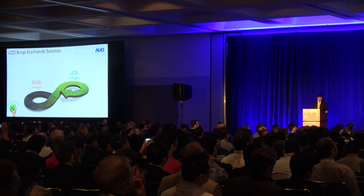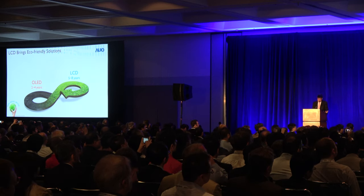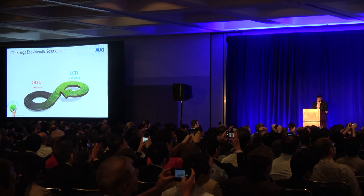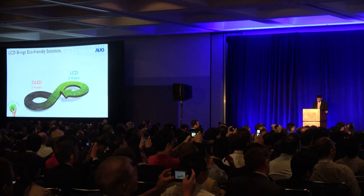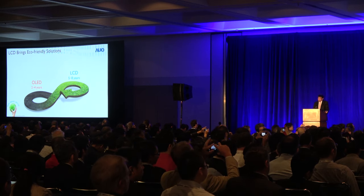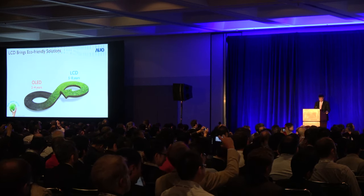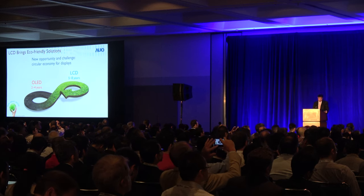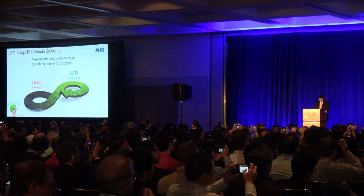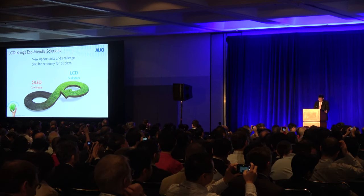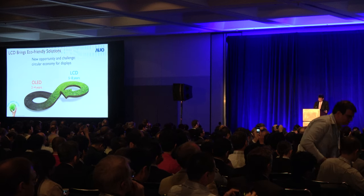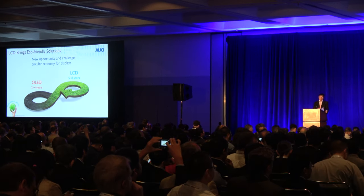LCD has a longer lifetime as shown on the chart. It is able to avoid unnecessary premature replacement and is more friendly to the environment with a lower replacement frequency. The structure of LCD can be divided into display panel and backlight module. When the product reaches its end of life, it is possible to partially replace the backlight module instead of scrapping it directly.